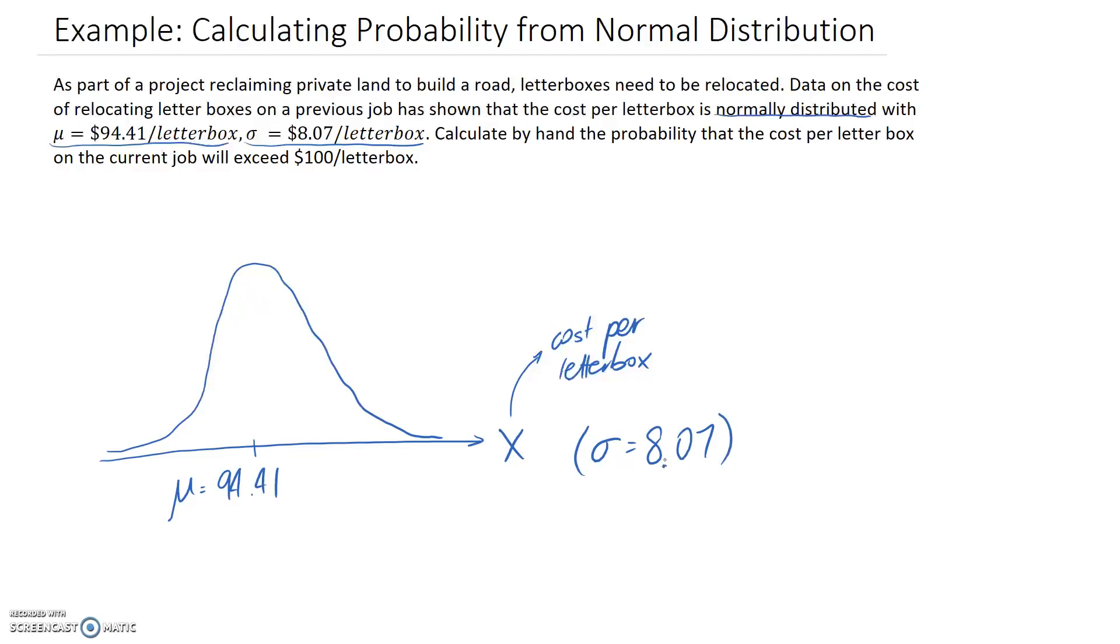We need to calculate the probability that the cost is more than $100. If we mark that onto our diagram, it's going to be somewhere to the right of our mean, and it's going to correspond to the area under the curve in this region.